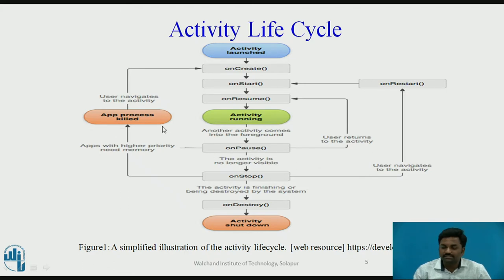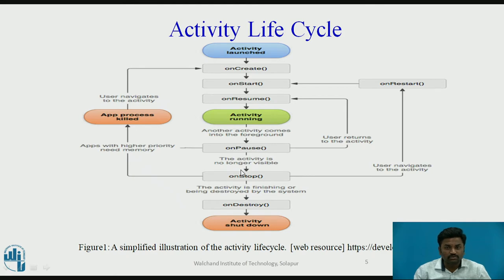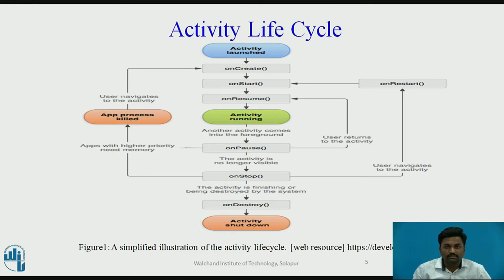When will the app process killed state occur? Let's say memory is limited and can only save 10 processes. If the 11th process gets loaded, one process has to be killed. That decision is taken by the operating system — to kill a process and make space for another important process. This is possible only because of the app process killed state.